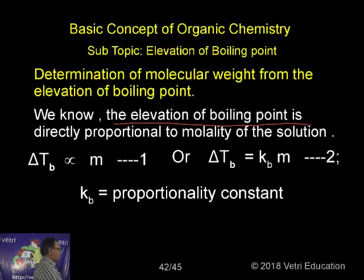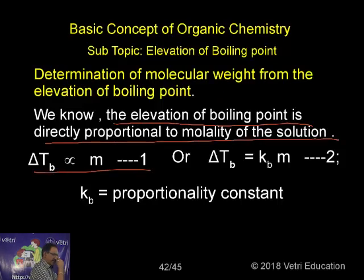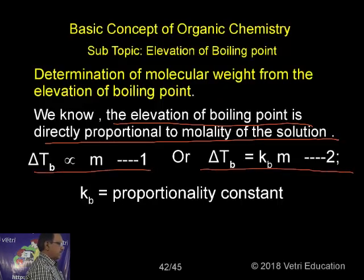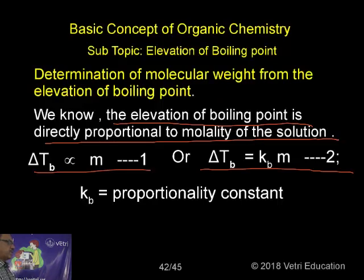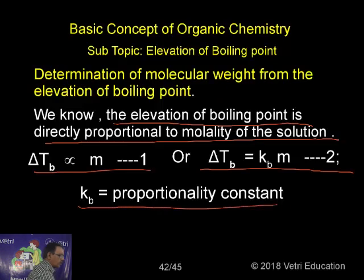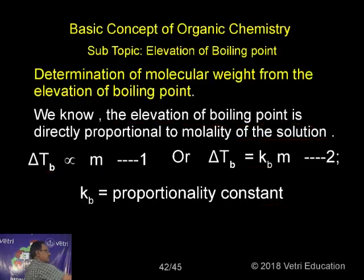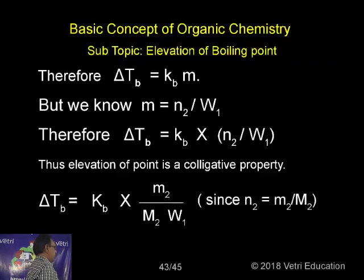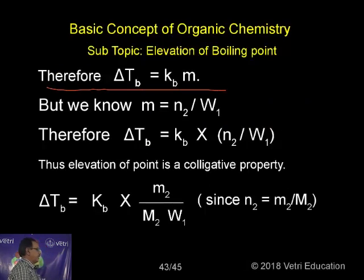The elevation of boiling point is directly proportional to the molality of the solution. We can write the equation by putting a constant: ΔTb = Kb × m, where Kb is the molal elevation boiling point constant — the proportionality constant — and its value is 0.52.